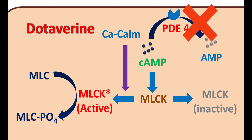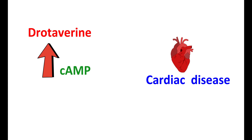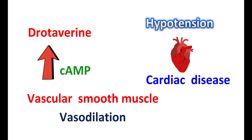Now let us know the precautions of this medication. Drotavarine should be carefully given in people with any cardiac disease. Since this medication inhibits the phosphodiesterase type 4 enzyme, it can increase cyclic AMP levels in various organs, leading to some side effects. Particularly, it can increase cyclic AMP levels in the vascular smooth muscle, which results in vasodilation. This results in reduction of blood pressure leading to hypotension. Therefore, when drotavarine is used, blood pressure should be monitored and any significant reduction of blood pressure should be immediately treated.